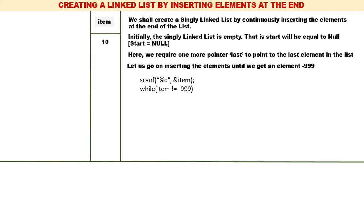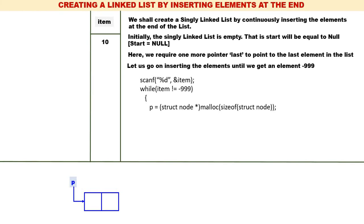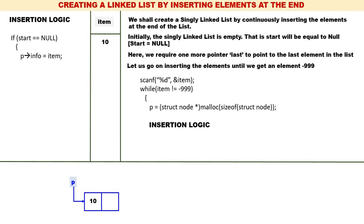We read 10. We check whether it is equal to minus 999 — it is not, therefore we create a new node. We set p->info equal to the item and insert the node. Since this is the first element, start is equal to null. There is only one element in the linked list, which is both the first and last element, so start is equal to p and last is equal to p. So 10 is inserted.